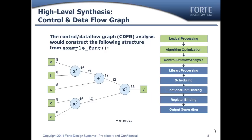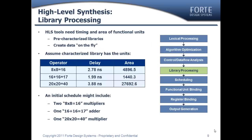Here you can see the various inputs coming into two multipliers and one adder, with the final adder producing the Y output. In this representation, there is no notion of time and no notion of clocks. To perform the next step, the HLS tool needs to understand timing characteristics. HLS tools do this either through a pre-characterized library or by creating functional units on the fly and extracting timing and area data. Assuming a characterized library flow, the three operations of interest are an 8x8 multiplier, a 20x20 multiplier, and a 16-bit adder, with relevant delays and areas for the technology node shown in the table.